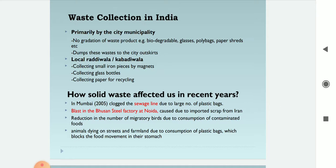Waste collection in India is primarily done by the city municipality with no gradation of waste products — e.g., biodegradable, glasses, poly bags, paper — and wastes are dumped to the city outskirts. Local Kabadiwala or Raddiwala collect small iron pieces by magnets, glass bottles, and paper for recycling.